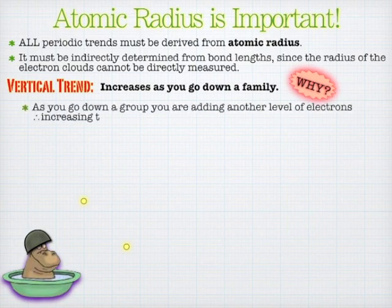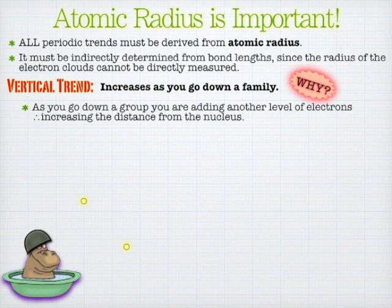Two things are happening as you go down a family. As you go down a family, you're adding on another layer of electrons, and that increases the distance of the outermost electrons from the nucleus. So that should make sense. If you're filling up a stadium, you fill up a row of seats, and the next group of students has to sit farther away.